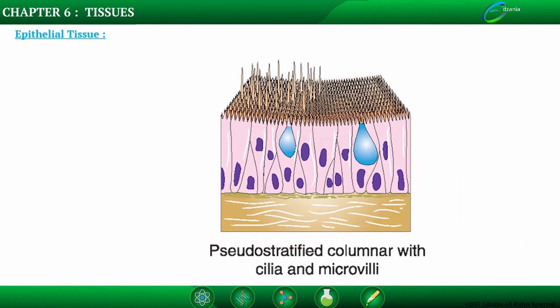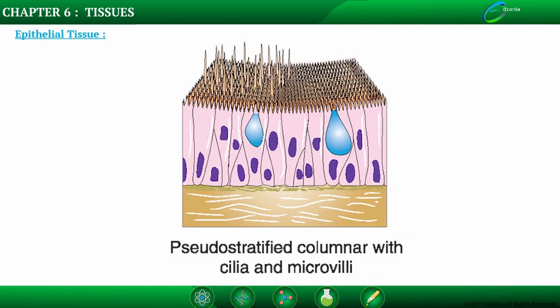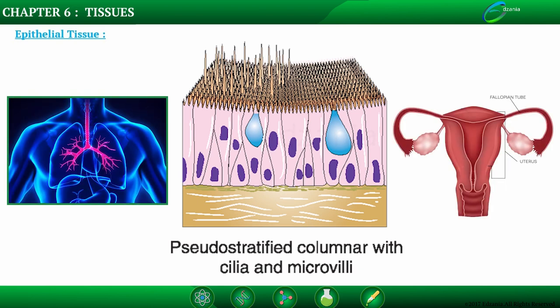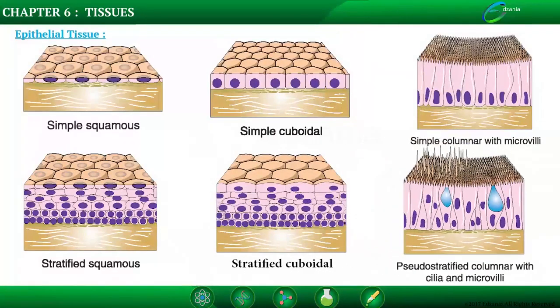Pseudo-stratified columnar epithelium: under a microscope, these cells appear to be in more than one layer, but they are actually a type of simple epithelium with only one layer — all cells rest on the basal lamina. These cells are ciliated, so it is called pseudo-stratified ciliated columnar epithelium. Ciliated tissues are found in the respiratory tract, uterus, and fallopian tubes. Their major function is to move mucus and other substances via cilia.